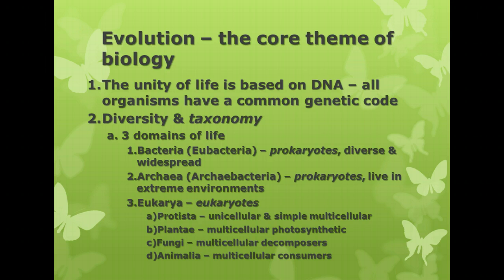Within all living things, there are three domains — three major huge groups. The first is domain bacteria, composed of kingdom eubacteria, which are all prokaryotes. They're very diverse and widespread. When you get a staph infection, that's from a member of kingdom bacteria. But when you have beneficial bacteria in your intestines, like E. coli, that help you digest certain foods and produce certain kinds of vitamins — those are also members of kingdom eubacteria, domain bacteria.